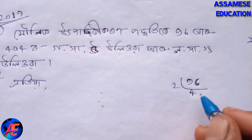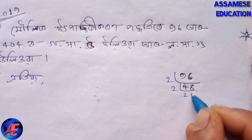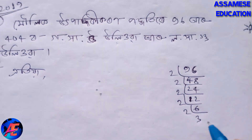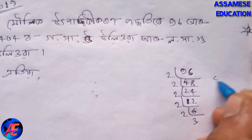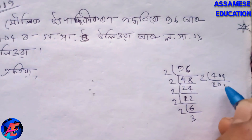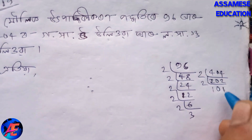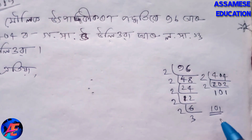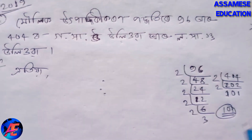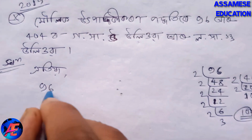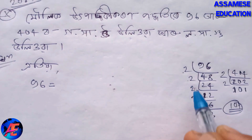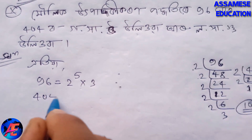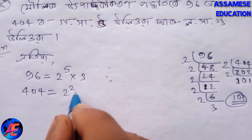So we can write: 96 is equal to 2 to the power 5 into 3. And 404 is equal to 2 to the power 2 into 101. So 2 to the power 6 into 3 as well.